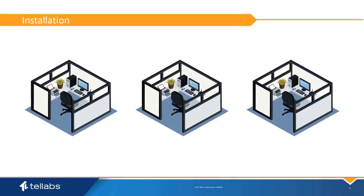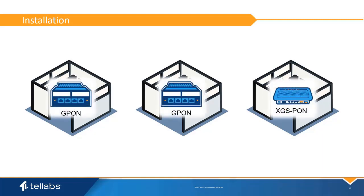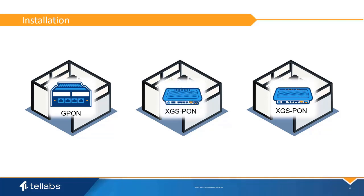Once both wavelengths have been placed onto the same fiber, either XGS-PON or GPON ONTs can be installed on the same fiber with no limitations. To upgrade a user from GPON to XGS-PON, simply unplug their GPON ONT and plug in the XGS-PON ONT. The ONT, if configured on the XGS-PON port, will immediately come into service and the user will have availability to the full 10-gig PON bandwidth. The GPON and XGS-PON ONTs cannot see each other's traffic and are totally isolated.